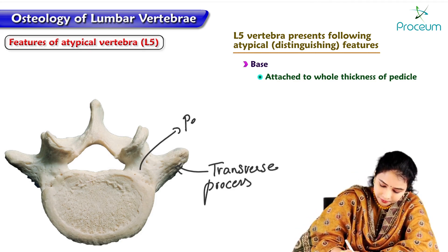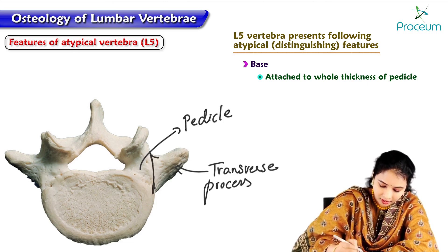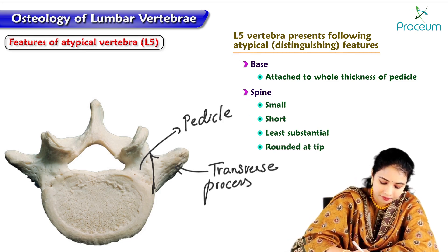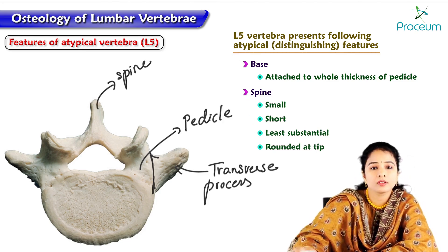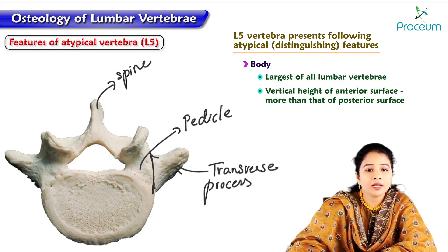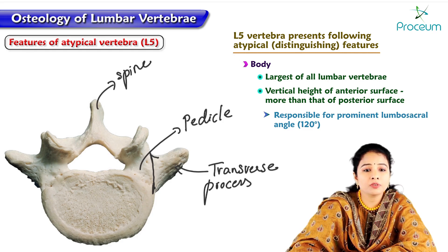The whole base of the transverse process is in attachment to the pedicle. The spine is small, short, least substantial, and rounded at the tip. The body is the largest of all lumbar vertebrae. The vertical height of the anterior surface of the body is more than that of the posterior surface.